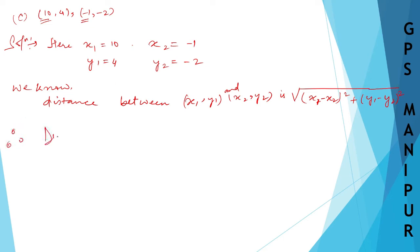Therefore, distance between the points (10, 4) and (-1, -2) is: x1 is 10 minus x2 which is -1, whole square, plus y1 which is 4 minus y2 which is -2, whole square.